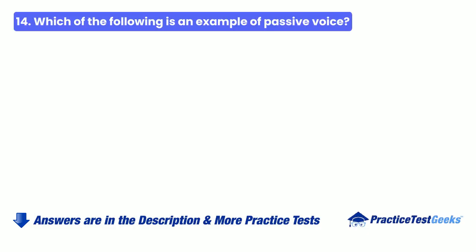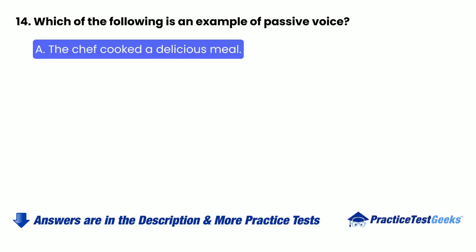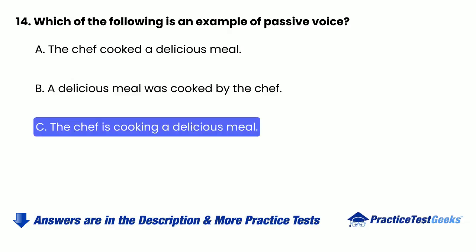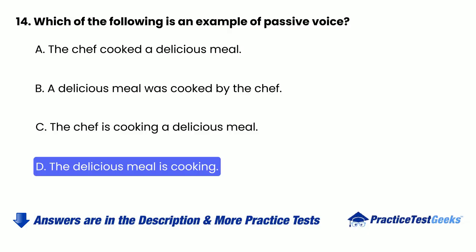14. Which of the following is an example of passive voice? A. The chef cooked a delicious meal. B. A delicious meal was cooked by the chef. C. The chef is cooking a delicious meal. D. The delicious meal is cooking.